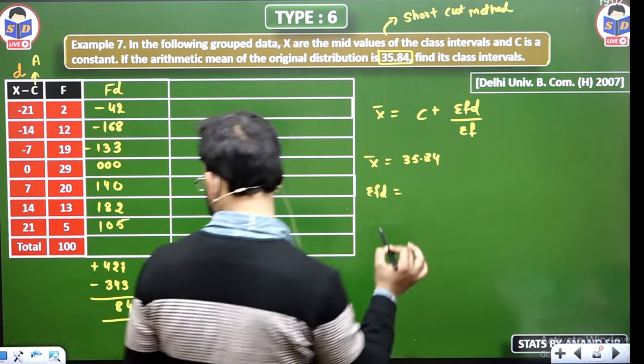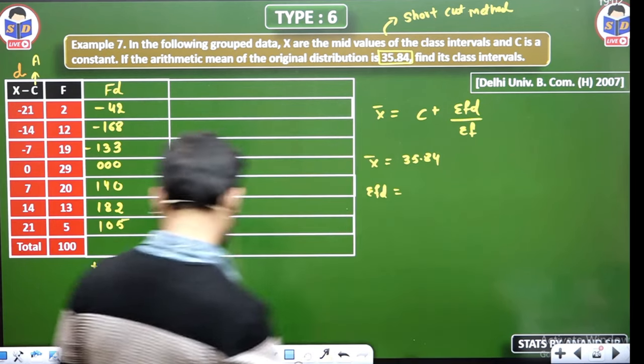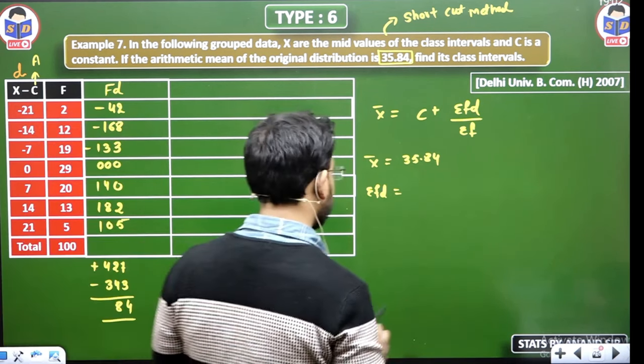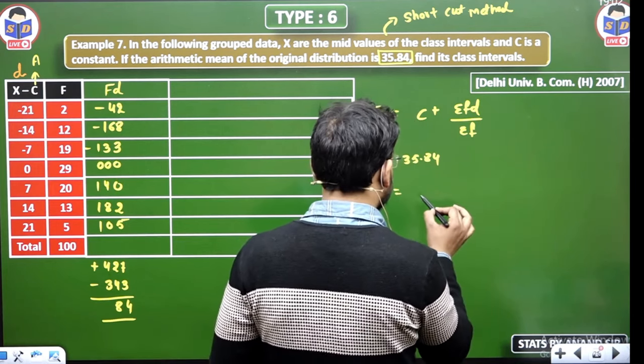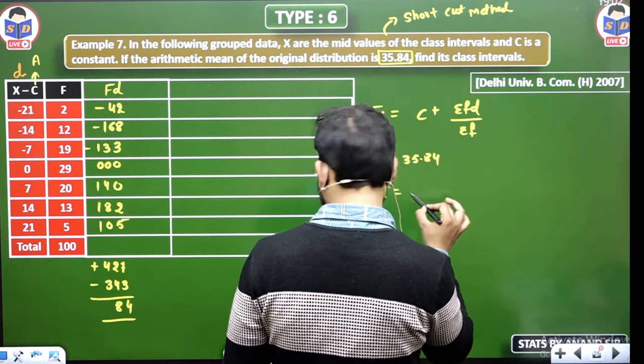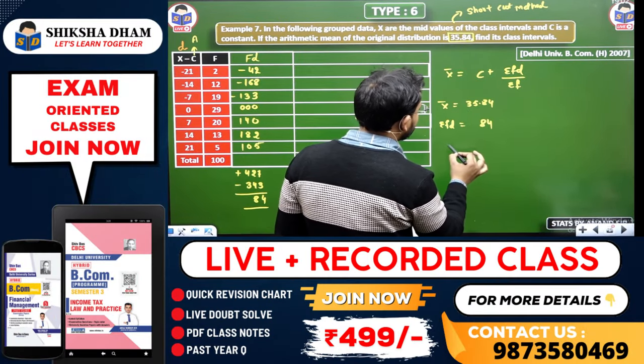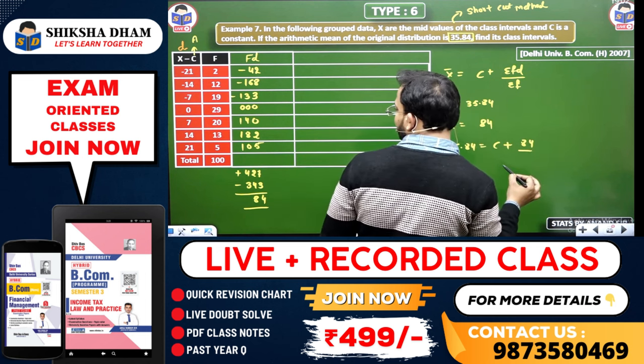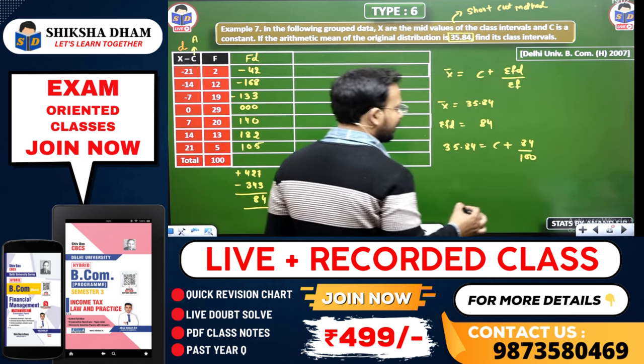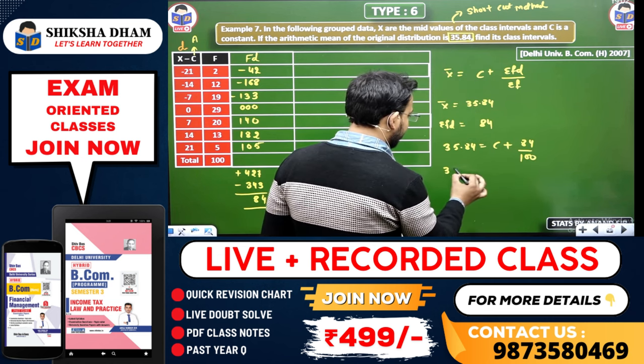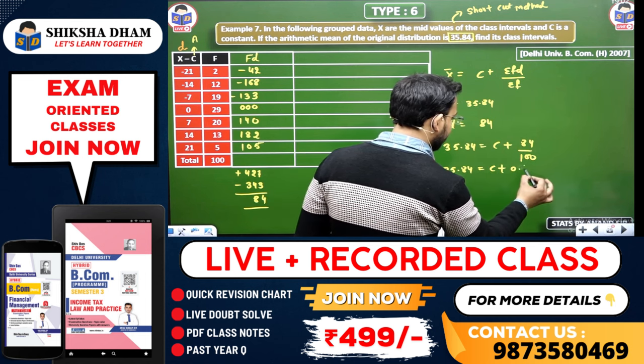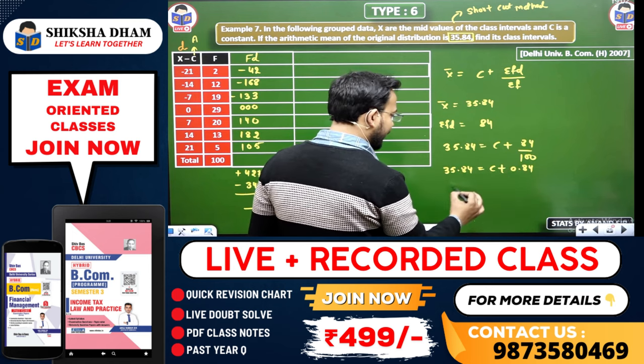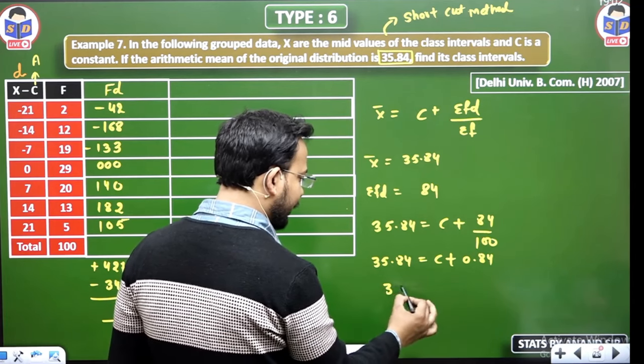Now you have, 84 here. 343. Solve here. Submission FD, 84, and X-bar, X-bar is 35.84 equals to C is unknown, Submission FD is known, and Submission F we know, Submission F is 100. Clear? Now solve, so you get 35.84 equals to C plus 0.84. Divide this, now transfer, you can directly take it. 0.84 minus 35 equals to C.